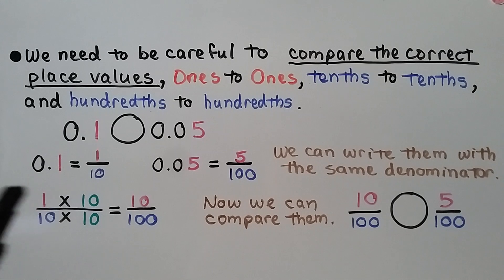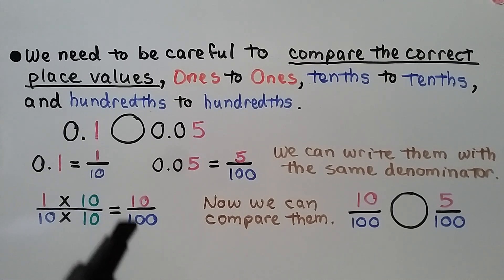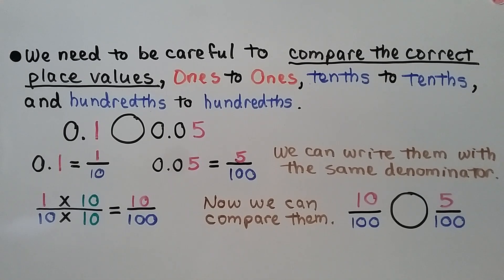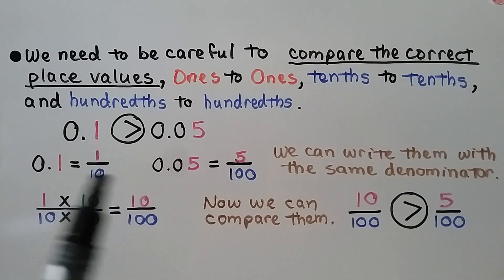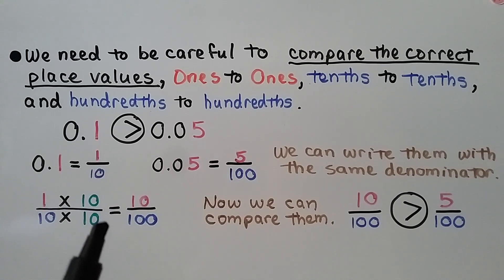We can write one tenth with a denominator of 100: ten times ten equals one hundred, and we multiply the numerator by the same amount — one times ten equals ten — giving us ten hundredths. Now comparing ten hundredths and five hundredths, the numerator ten is greater than five, so ten hundredths is greater than five hundredths, and we put a greater than sign. It sometimes helps to write both as fractions with the same denominator on scratch paper.